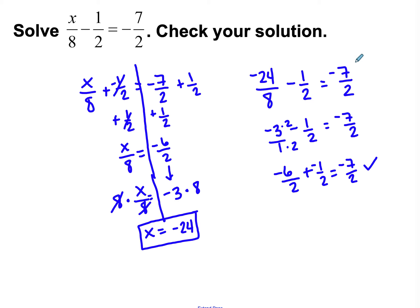Your work for your checks should have two steps for two-step equations. You can't just write it out and put a checkmark; you need to show the work to support it.